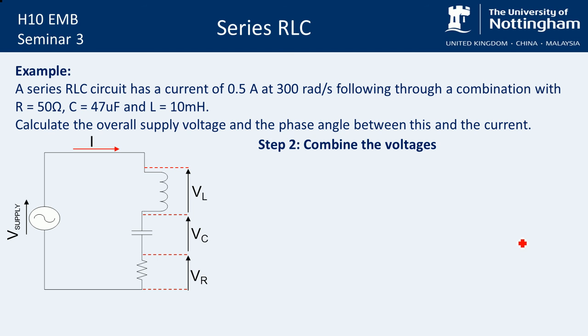So step two, we're going to combine those voltages now. And this is when we need to take into account those phase shifts. So in a standard series circuit with a DC supply, you could just add all of those values together. Because this is AC, you can no longer do this because of that pesky phase shift. So what I'm going to do is put my phasor diagram together.